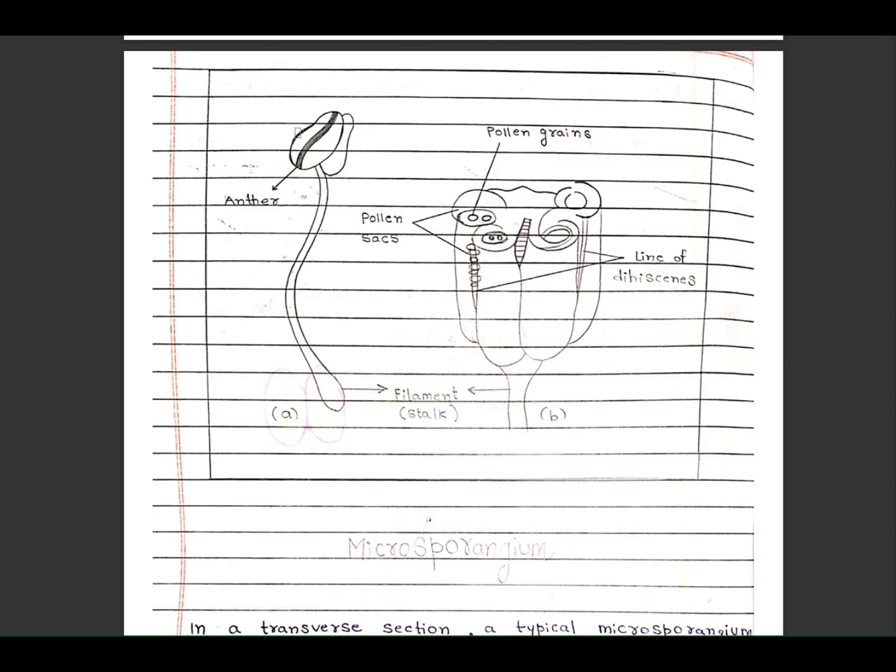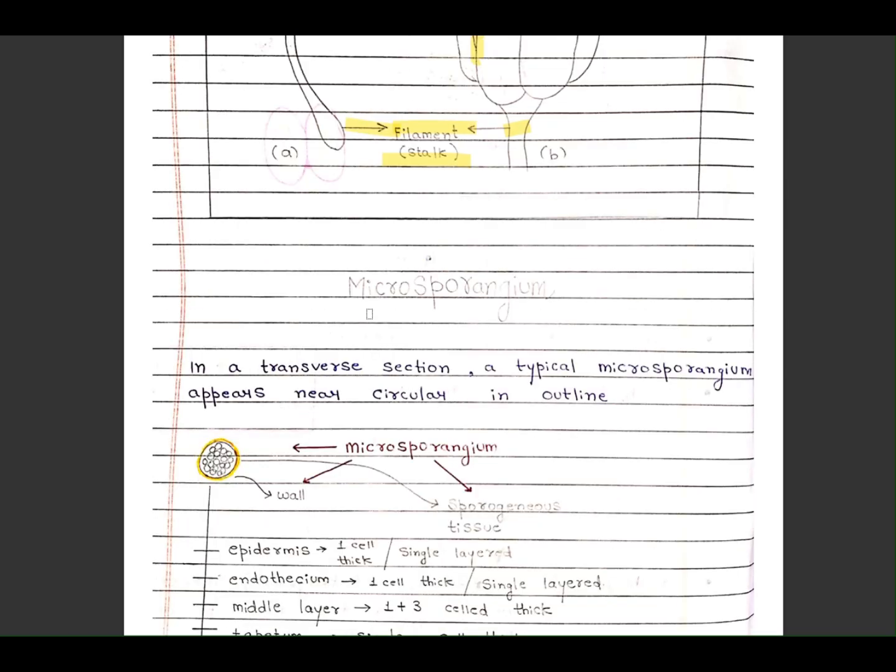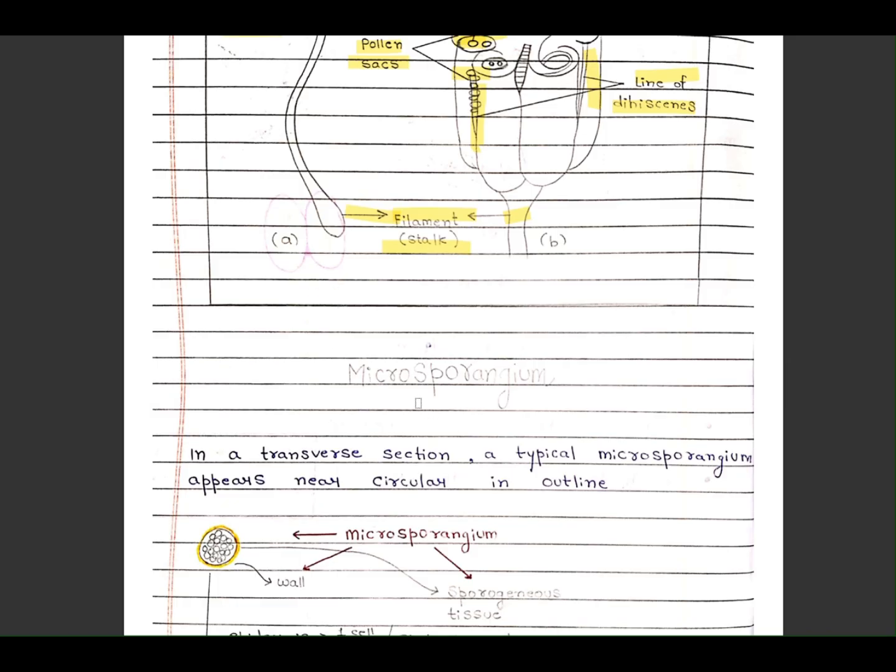This is the anther, it is the pollen grain, these are the pollen sacs, and these are the lines of dehiscence. It is the filament, the stalk. It is a whole diagram of microsporangium.